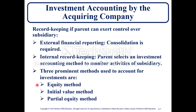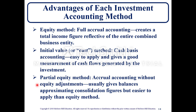We went over the equity method in chapters one and two. The advantage of each method: the equity method is a full accrual accounting — it creates a total income figure reflective of the entire combined business entity. The initial value or cost method uses cash basis accounting, is easy to apply, and gives a good measurement of cash flows generated by the investment. The partial equity method is accrual accounting without equity adjustments, usually gives balances approximating consolidation figures, but is easier to apply than the equity method.